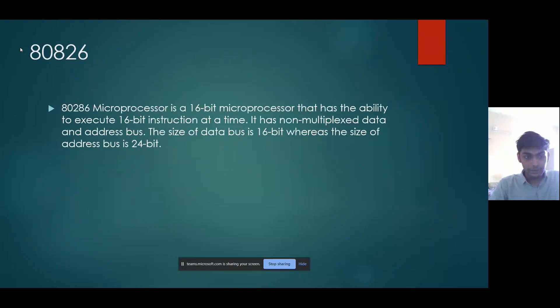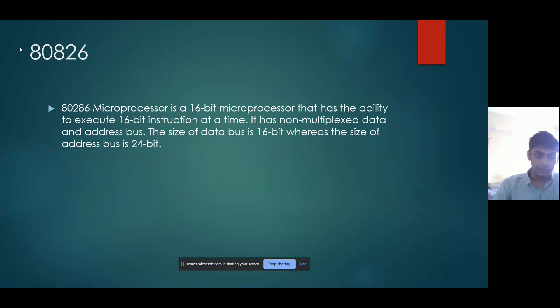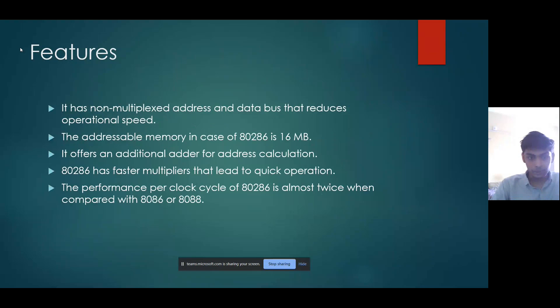The 80286 microprocessor is a 16-bit microprocessor that has the ability to execute 16-bit instructions at a time. It has non-multiplexed data and address buses. The size of the data bus is 16-bit whereas the size of the address bus is 24-bit. The non-multiplexed address and data bus reduces operational speed.